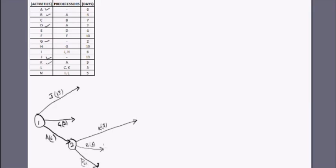Now let's check what follows G. H follows G. We also see that activity I follows both J and H, which indicates that J and H should end at the same node. So we extend and merge them at one node. Activity H takes 10 days to complete.